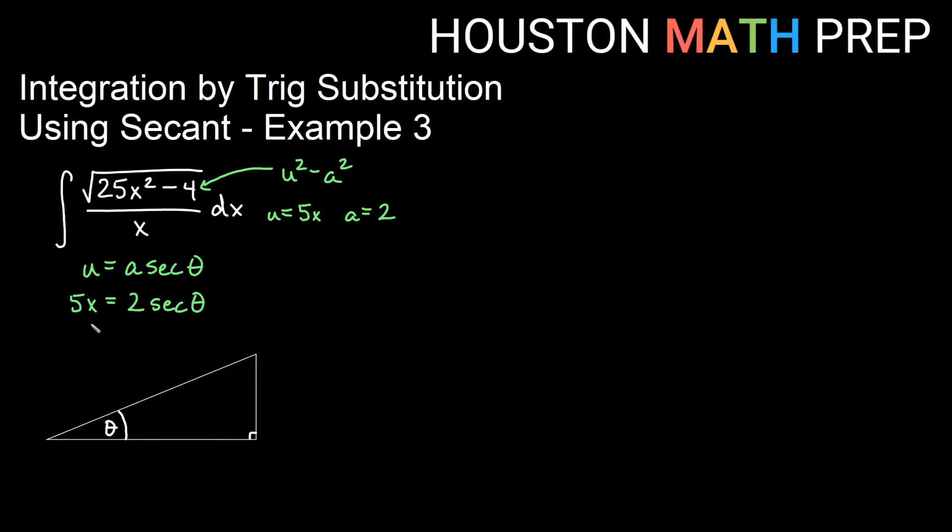So one of the things I'm going to need to do is say that x is equal to 2 over 5 secant of theta so that when I need dx I can just say the derivative of that is 2 fifths secant theta tan theta d theta. We'll need that.